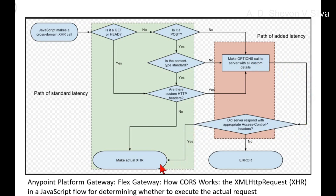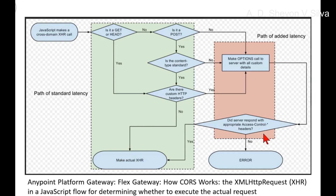If yes, it is connected to make actual XHR. If no, it is connected to errors. Are there any custom HTTP headers? If no, it's connected to make actual XHR. The GET/HEAD, POST, content type standard, and custom HTTP headers checks all lead to make actual XHR as part of standard latency, while the OPTIONS call to server and reading server response with appropriate access control headers are part of the added latency path.